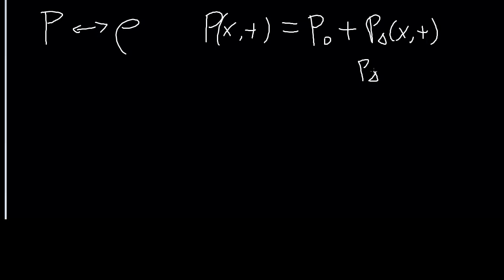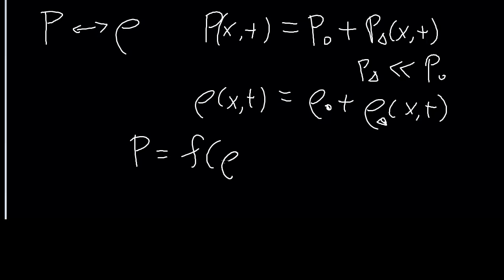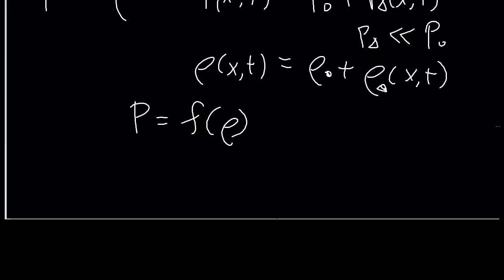And of course, the average and background is the same throughout space and time. And then the change itself is the part that depends on X and T. The assumption here, of course, is that this change is much, much smaller than the average. Very similarly, we can write the same thing for density, which has some kind of average density and some kind of change away from that average. Now we don't quite know how pressure relates to density. So we'll keep it general and say pressure is some function of the density.